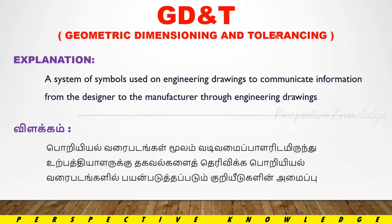GD&T is a system of symbols used on engineering drawings to communicate information from the designer to the manufacturer through engineering drawings.